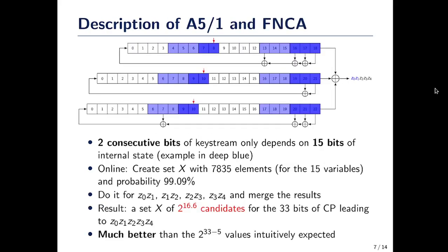To go into more detail about the experiments we did, I will first introduce A5-1. It's an old stream cipher that was used in the GSM standard about 40 years ago. It's a stream cipher composed of three registers with asynchronous clocking represented by the red arrows.